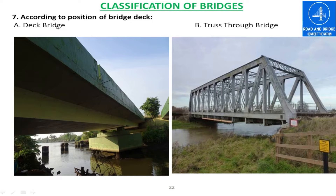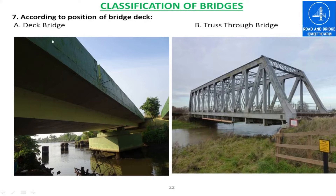According to the position of the deck, the bridge can be classified into three categories: deck bridge, through bridge, and semi-through bridge. This is the deck bridge. This is the through truss bridge and this is the semi-through bridge. The truss members are below the deck and also above the deck, that's why it is called a semi-through bridge, and this example is located in China.